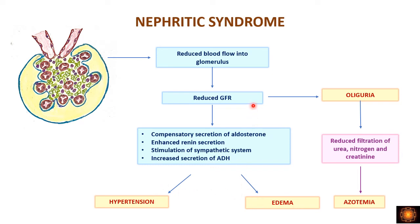Because of reduced GFR, the amount of urine formed is reduced — causing oliguria. When oliguria is present, the amount of blood filtered is reduced, meaning less urea nitrogen and creatinine is filtered. So there is more retention of urea nitrogen and creatinine in the blood, causing azotemia.